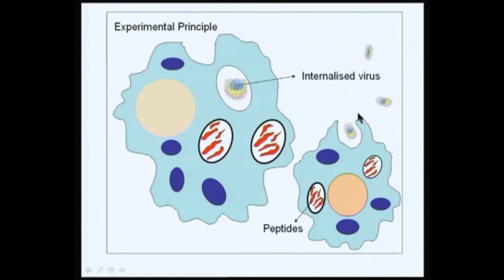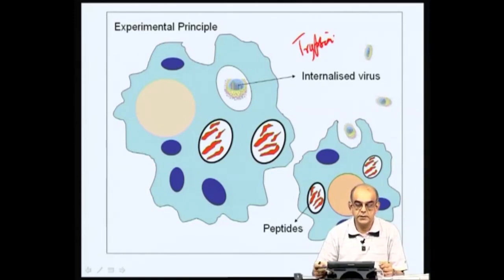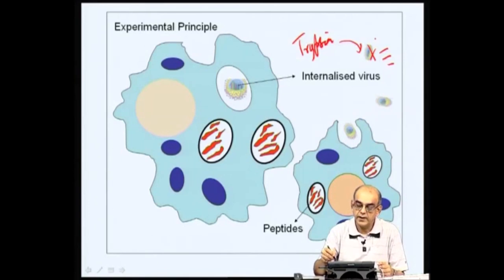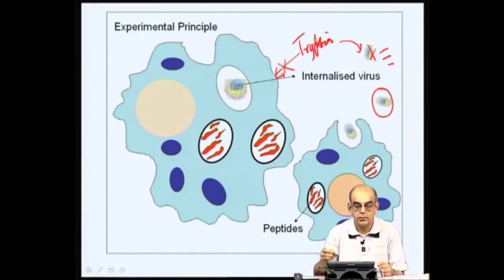The main important thing to bear in mind is that after phagocytosis, the antigen — whether soluble, bacteria, or viruses — is taken up inside the macrophage and therefore not available outside. In such a situation, if you used trypsin as a protease, it has the ability to act on the antigen and cleave it into smaller peptides. Trypsin can only act on the virus particle or antigen if it is available outside the macrophage. If the antigen is internalized, trypsin cannot enter the cell and therefore cannot act on it.